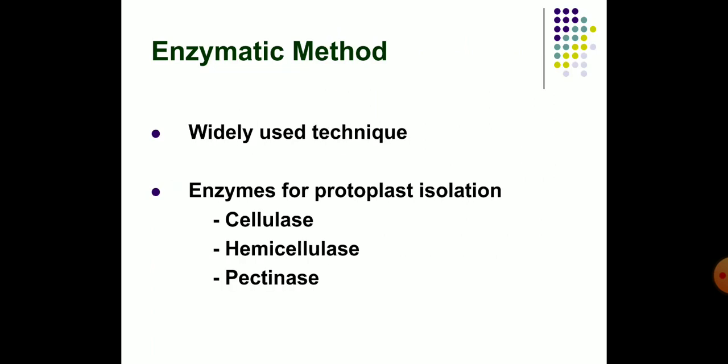The enzymatic method is a very widely used technique for the isolation of protoplasts. Chemically, the plant cell wall is mainly composed of cellulose, hemicellulose and pectin, which can be degraded by the enzymes cellulase, hemicellulase and pectinase. The success of protoplast isolation depends on the condition of the tissue and the combination of enzymes being used.